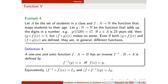If f is defined from A to B and it is one-to-one and onto, then I can define the inverse of f. Because we are defining the inverse, the domain and co-domain will be changed. So f inverse will be a function from B to A.